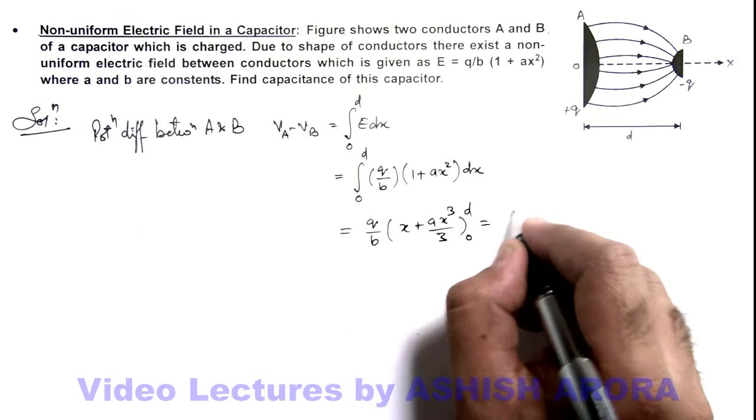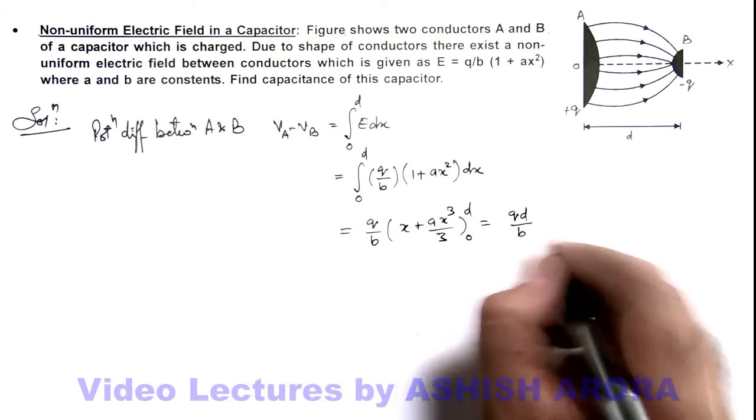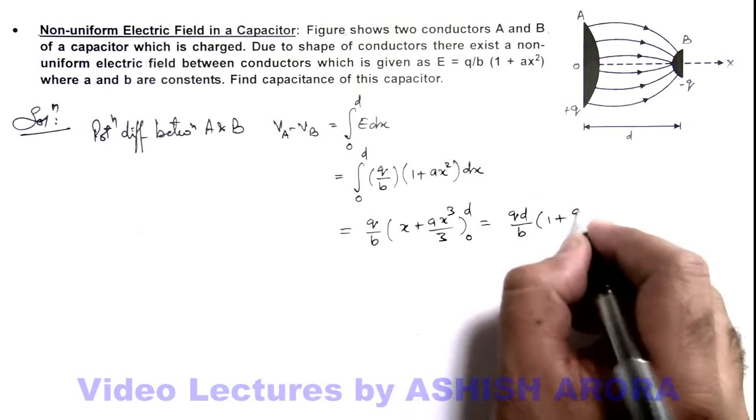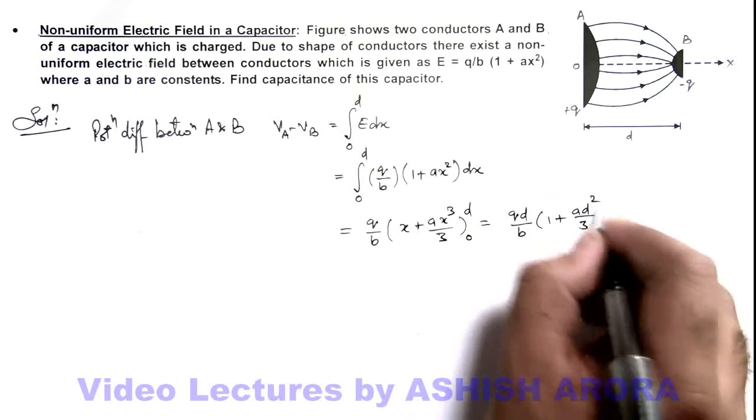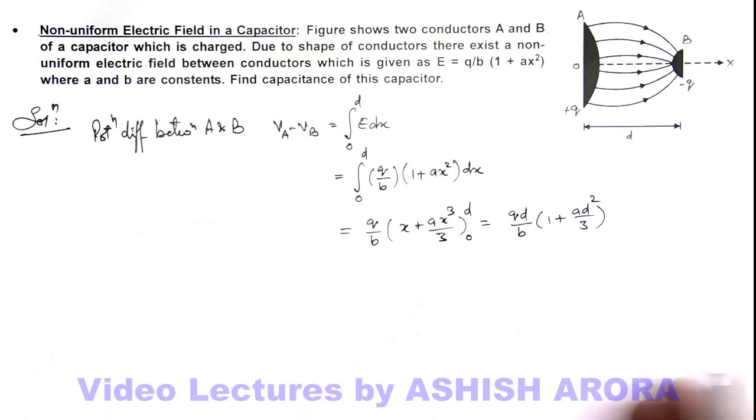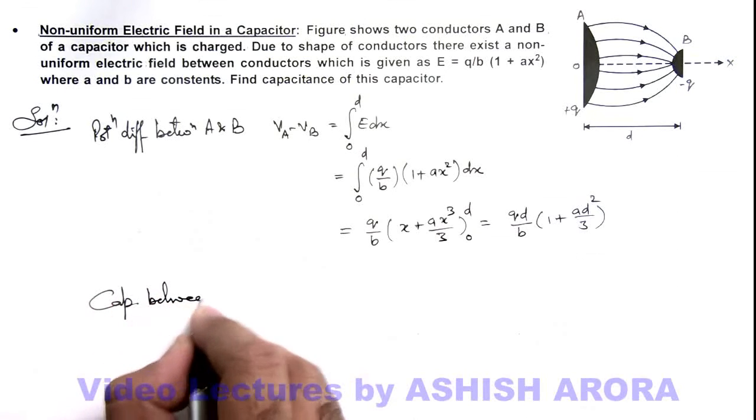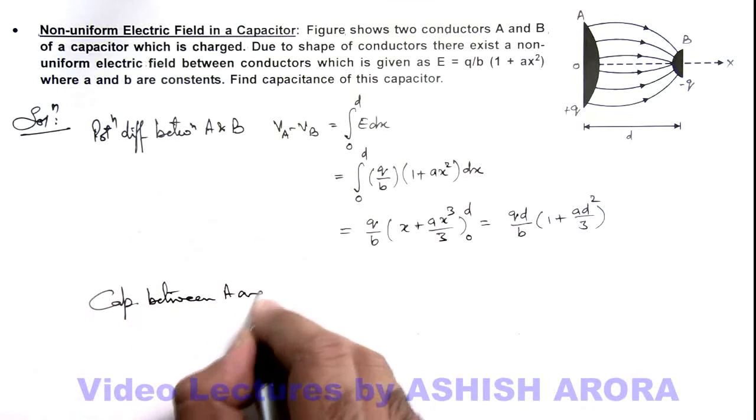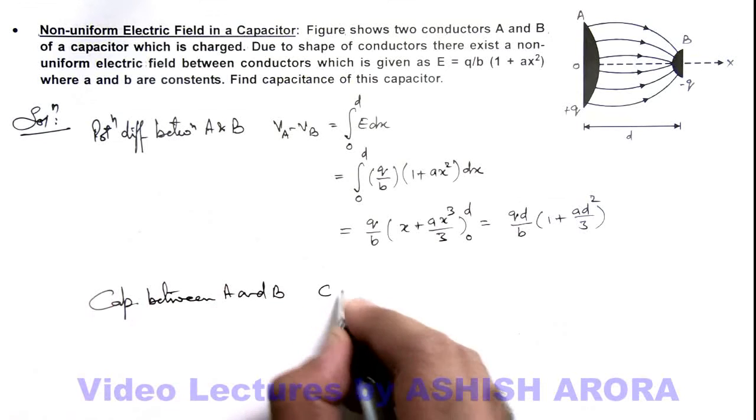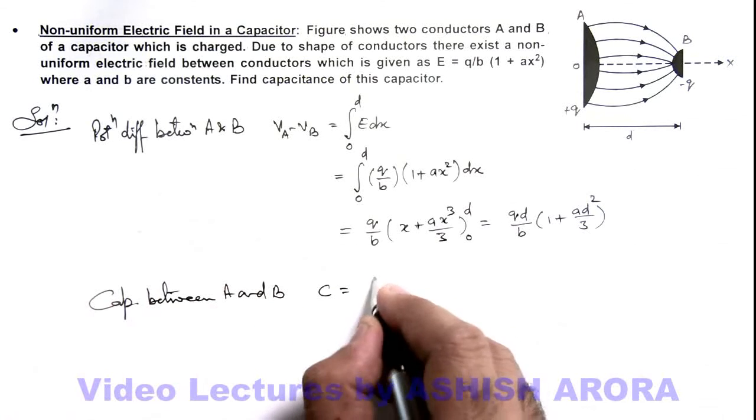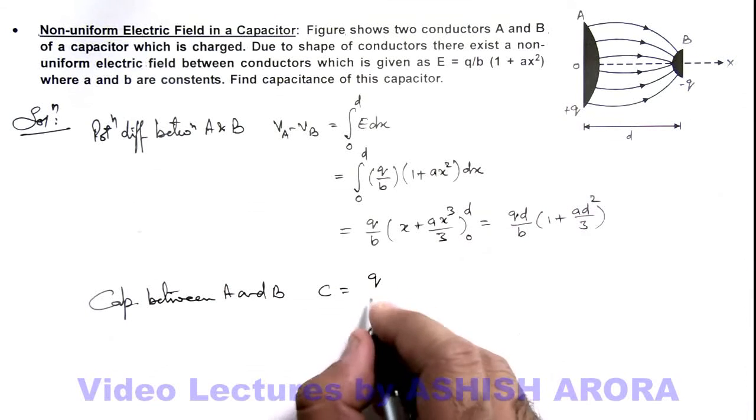So this is (qd/b)(1 + a·d²/3). So this is the potential difference, and we can directly find out the capacitance between A and B, which is given as C, that is the charge